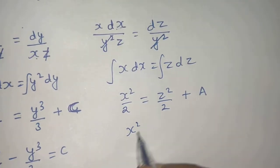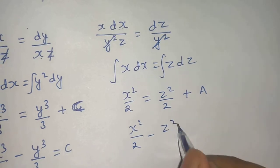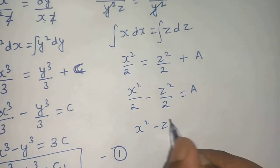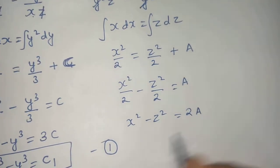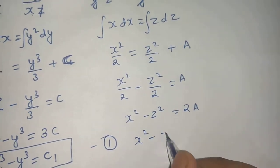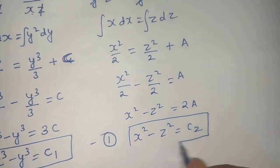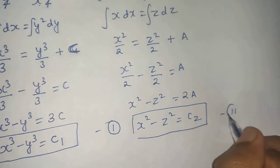Now x square by 2 minus z square by 2 equals to a. x square minus z square equals to 2a. Now let that 2a constant be equal to C2. So this is my second equation.